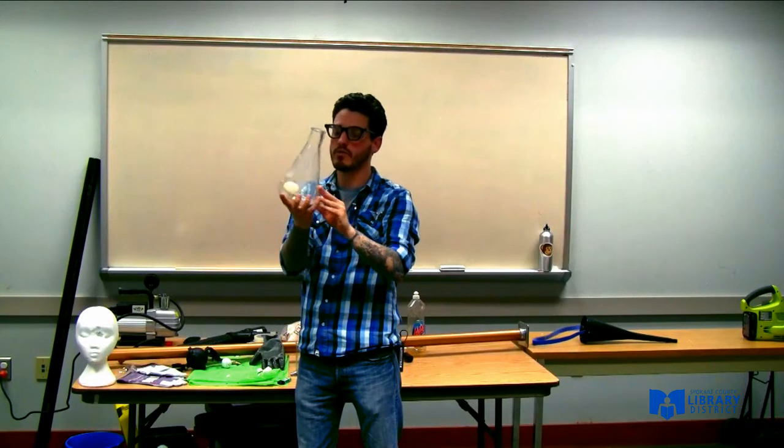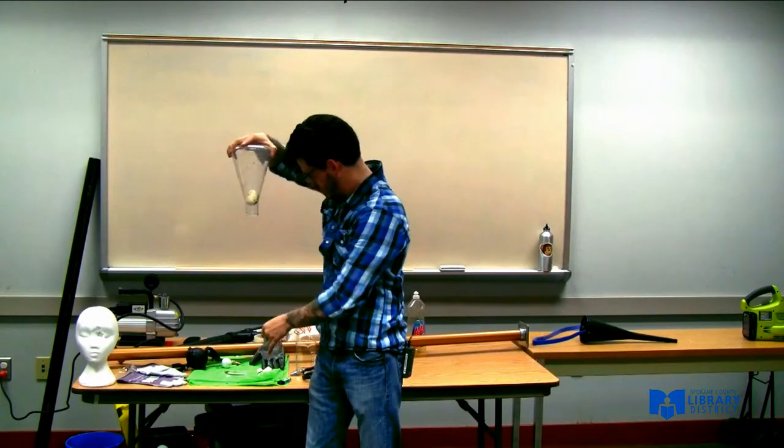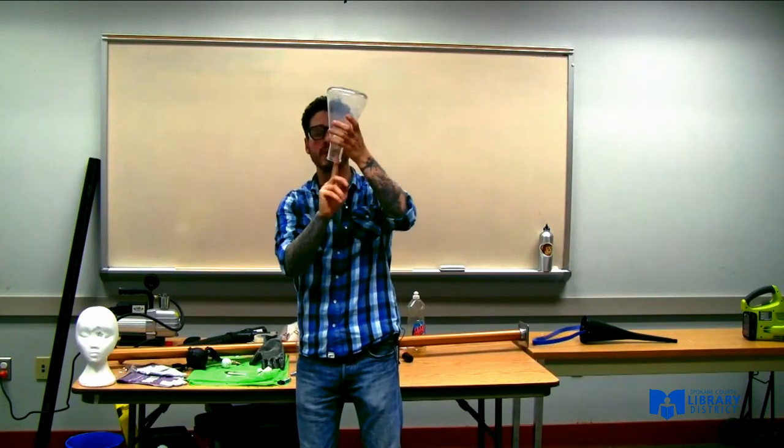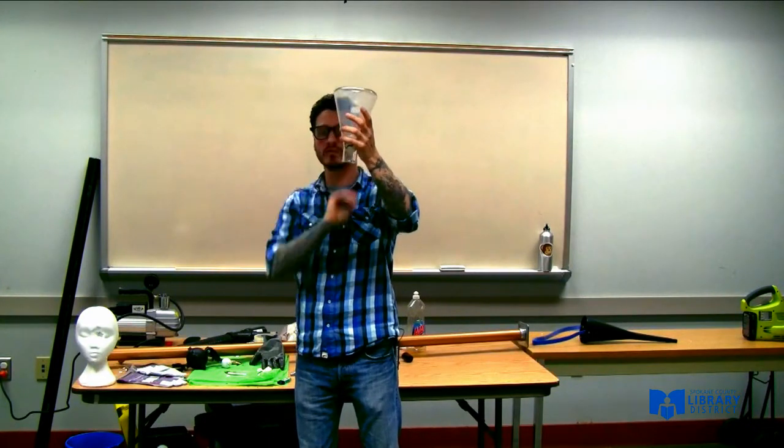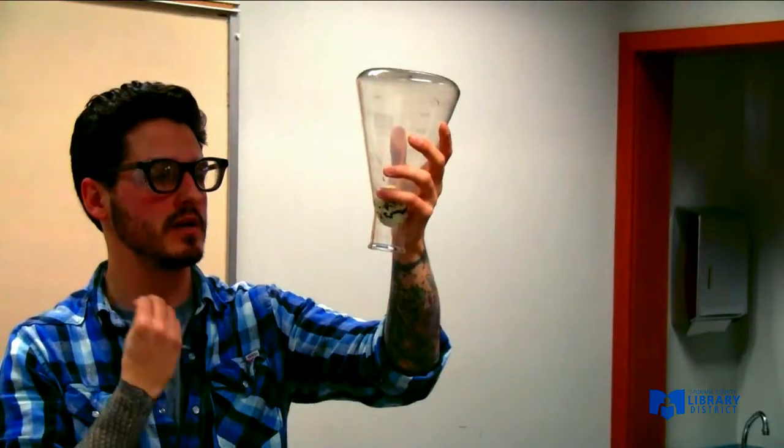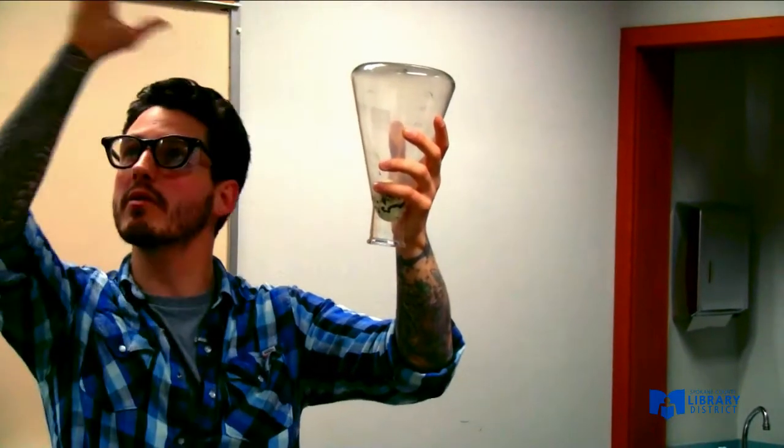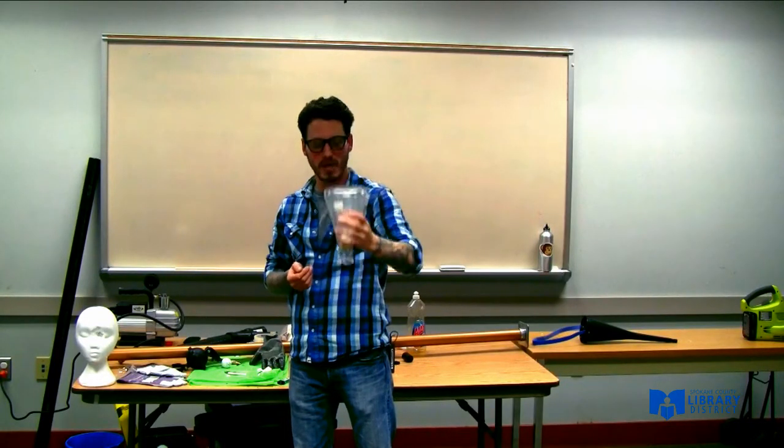One other problem we run into though, how do we get Egbert back out? What we need to do is create another pressure imbalance. Just like the very first imbalance, we decreased the pressure inside the bottle. This time, we will increase the pressure inside the bottle. Make it greater than 14.7 pounds per square inch, which is outside. We should get Egbert back out again.